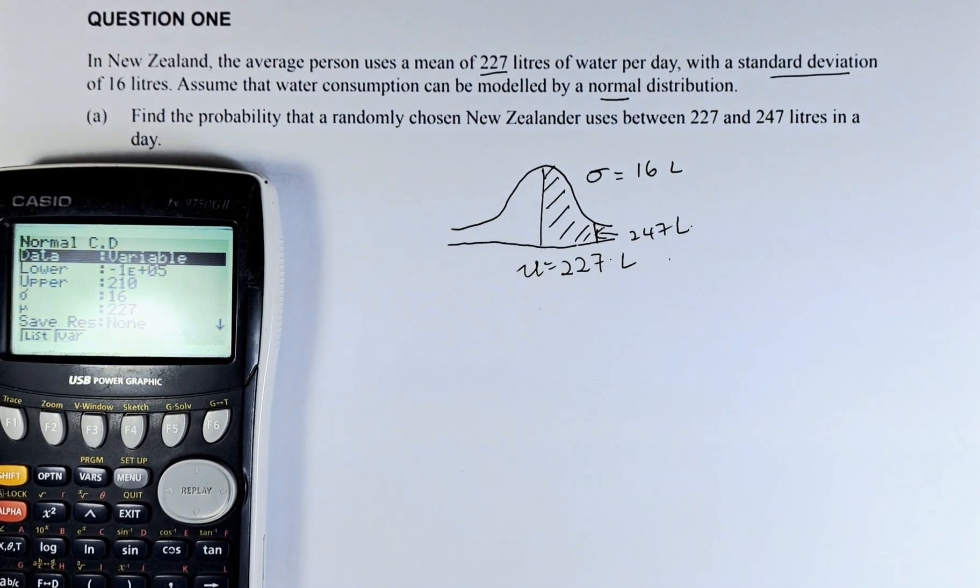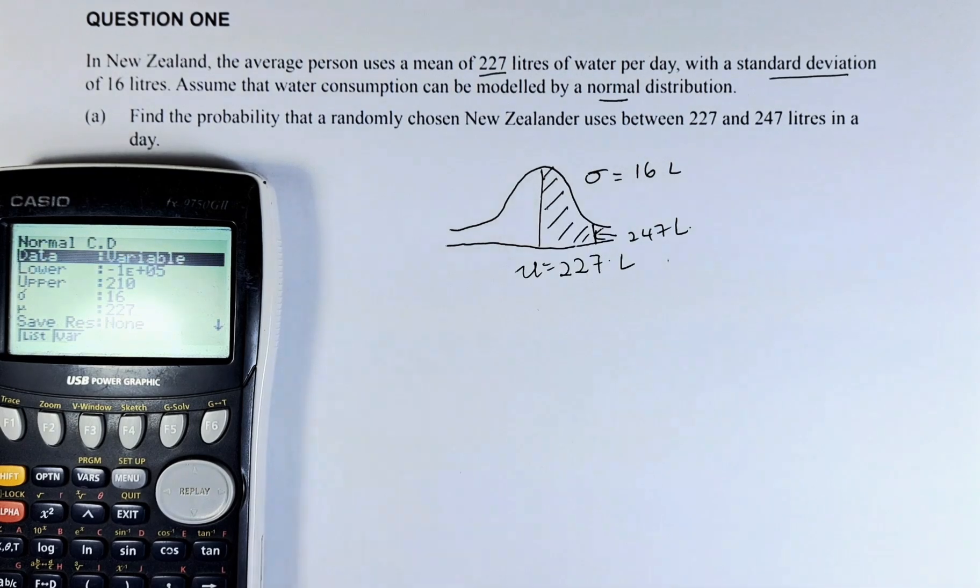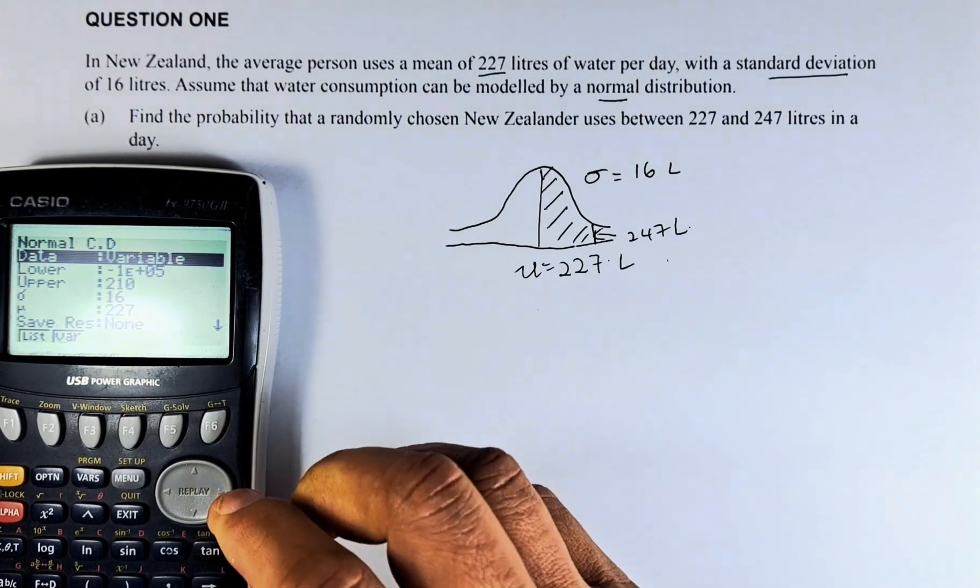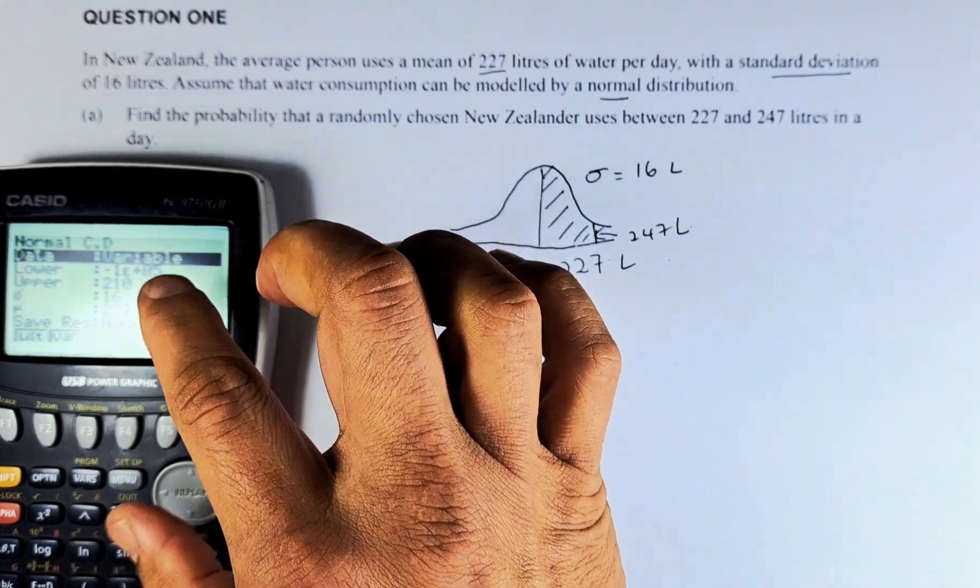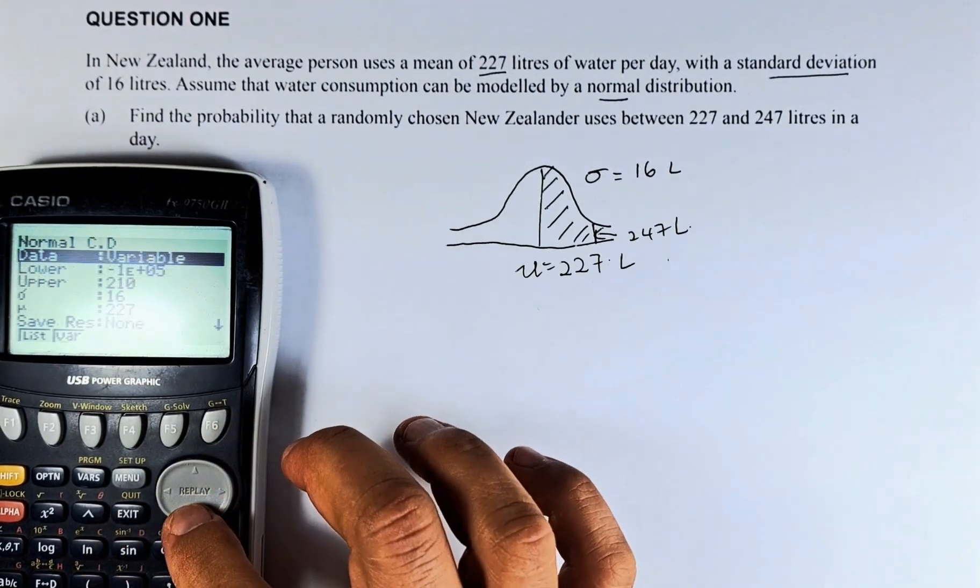Now we are going to key in the data. We are looking at this area from 227 to 247. So we are going to start. First, make sure your data is under the variable, then you execute. Then you go to the next one.